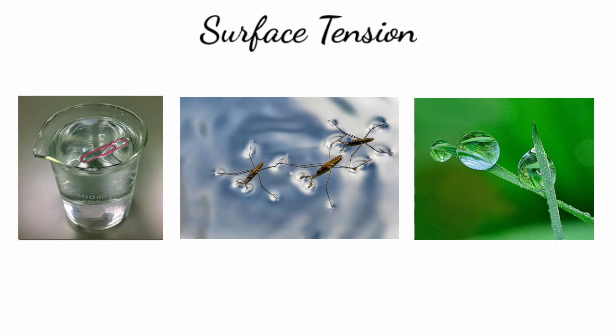A water drop takes the shape of a spherical shape. The significance of the spherical shape is that it has the minimum surface area for a given volume. There are two approaches to explain surface tension: the molecular force of attraction approach and the potential energy approach. The potential energy approach is more complicated.